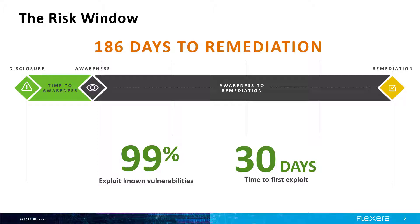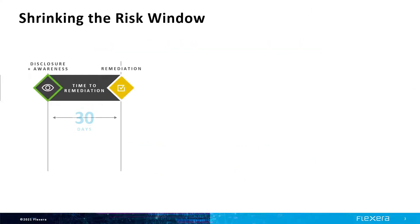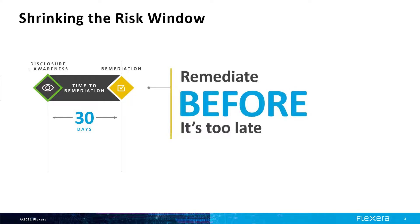The average time to the existence of an exploit has been about 30 days, but some say this is getting more aggressively closer to just a week now. Even at 30 days, it leaves over 150 days where you have a vulnerability at the time that attackers are exploiting it in the wild. The goal is to shrink this window by becoming aware of the vulnerabilities that affect you right away and deploying a patched version of the software to remediate it as soon as possible.